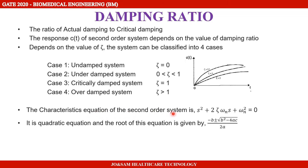For the characteristic equation of the second order system, we equate the denominator to zero. The denominator is s² + 2τωns + ωn² = 0. To find the roots, we apply the quadratic formula: minus b plus or minus root of (b² minus 4ac) divided by 2a.